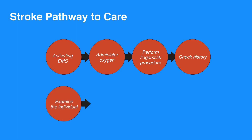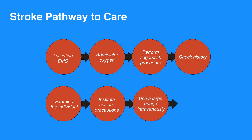Examine the individual and determine deficits such as gross motor, gross sensory, and cranial nerves. Institute seizure precautions. Use a large gauge IV in the antecubital fossa. Notify the hospital and take the individual to a stroke center if possible. Individuals with ischemic stroke who are not candidates for fibrinolytic therapy should receive aspirin unless contraindicated by true allergy to aspirin.